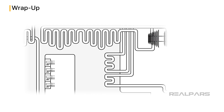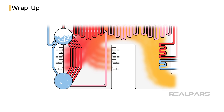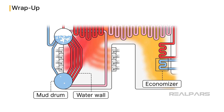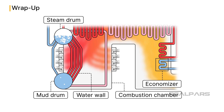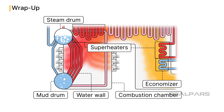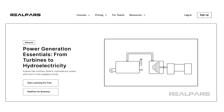Just to recap, here's what you learned in this video. We looked at the roles of the economizer, water wall, and mud drum, and what happens inside the combustion chamber and steam drum. We also talked about the role of superheaters to provide the desired temperature of the steam turbine. If you want to learn about power generation, be sure to check out our course Power Generation Essentials from turbines to hydroelectricity on realpars.com. We'll see you next time.